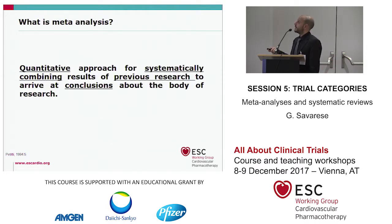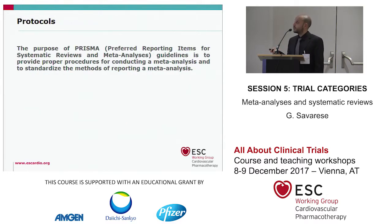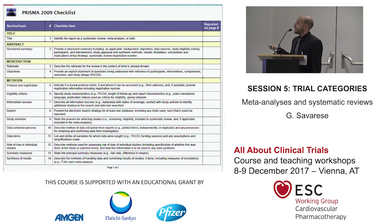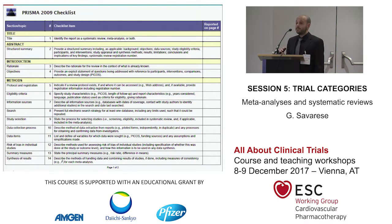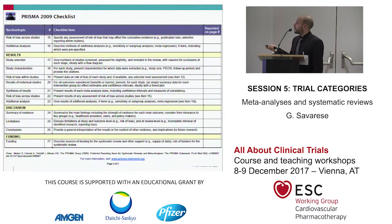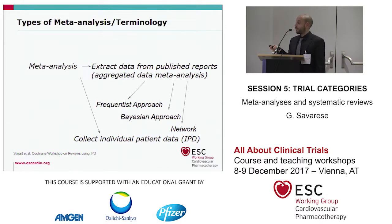So what is a meta-analysis? It's a quantitative approach for systematically combining results of previous research to arrive at a conclusion about the body of research. There are many protocols to perform meta-analysis in a standardized way, and PRISMA is one of the most used. According to PRISMA, we can write the results of a meta-analysis in our paper, and it suggests which methods are important to report, how to report results, and what to write where.